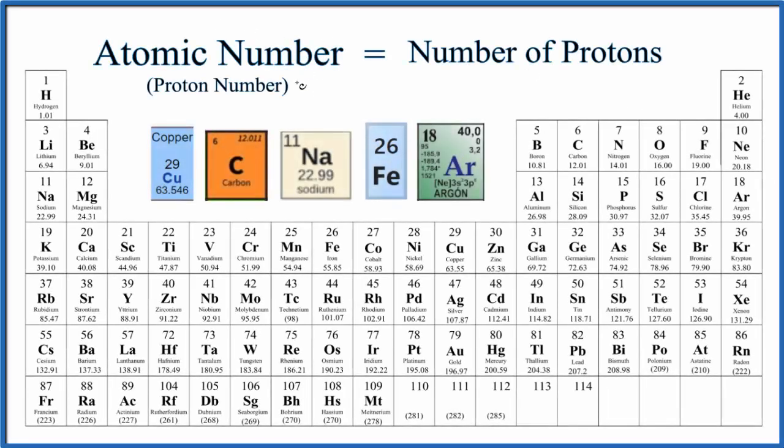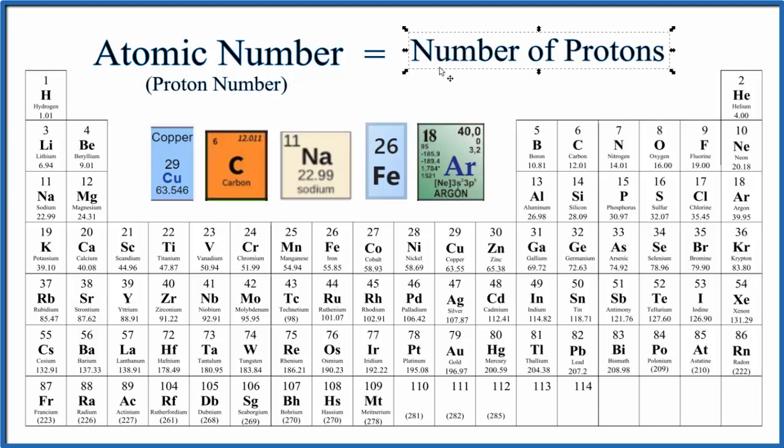You might ask, what is the atomic number on the periodic table? Where do I find the atomic number on the periodic table? The atomic number, also sometimes called the proton number, is the number of protons in the nucleus of an atom. On the periodic table, it's almost always the whole number right above the element symbol.